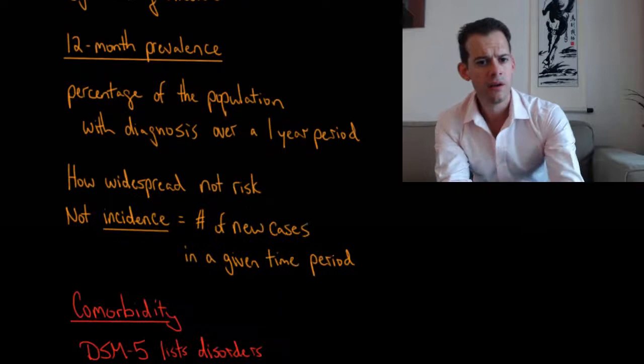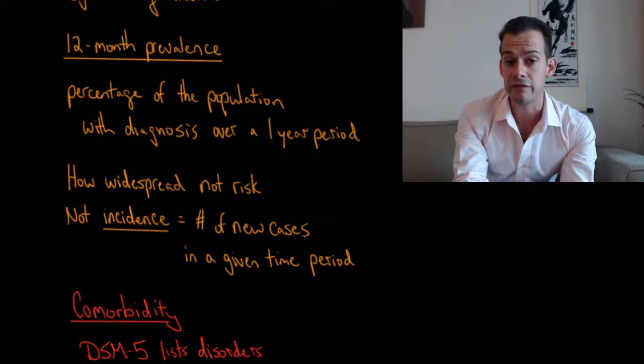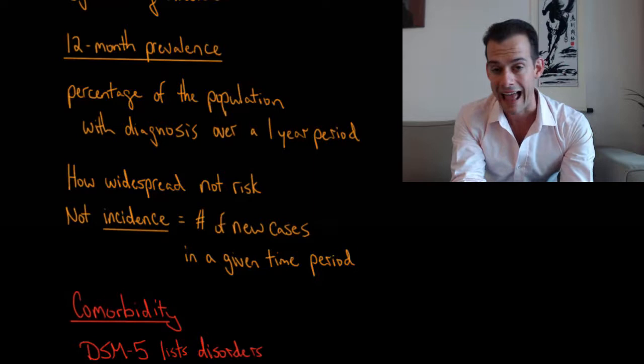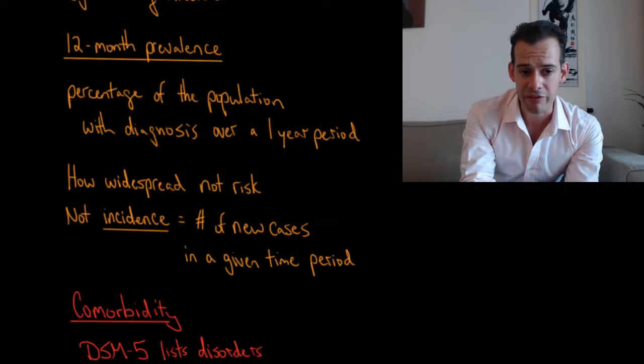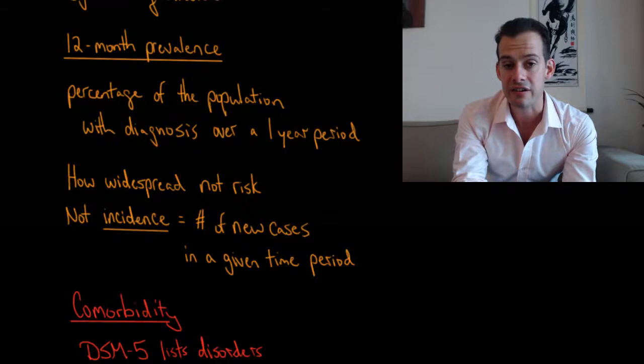Now in the DSM-5 the prevalence that's given is usually a 12-month prevalence. So this refers to the percentage of the population with that diagnosis over a one-year period. So what percent of the population has this diagnosis during a year? Now it's important to remember that the prevalence here, in this case this 12-month prevalence, refers to how widespread the illness is, not the risk of contracting it.